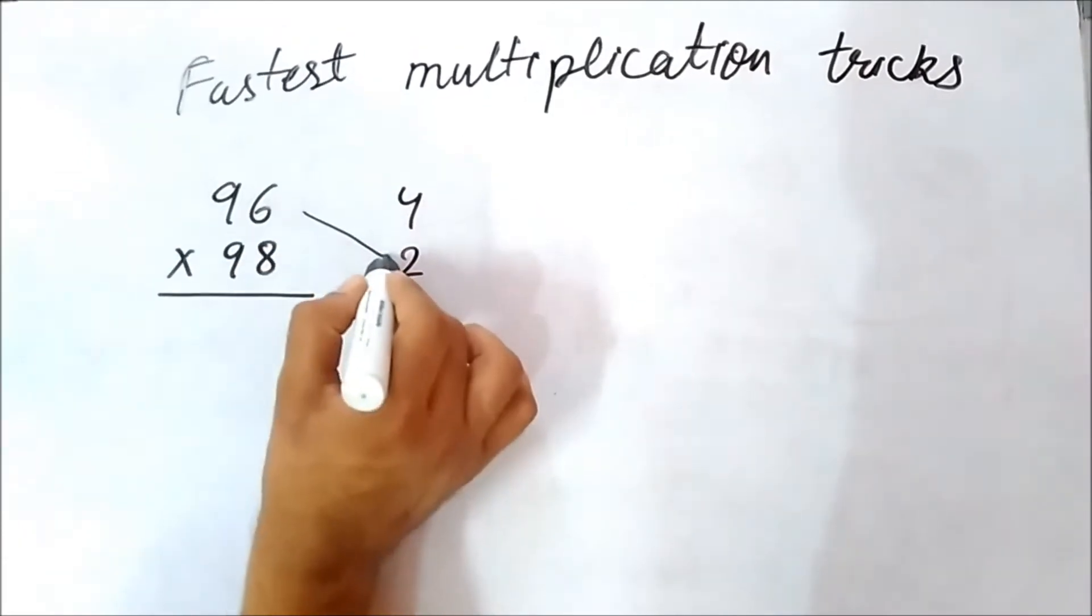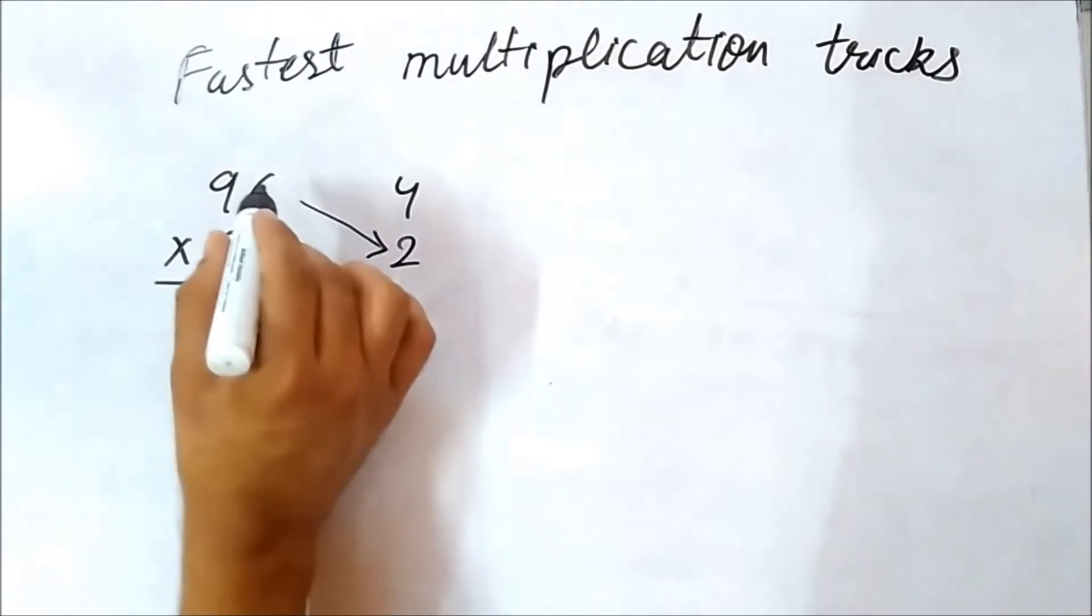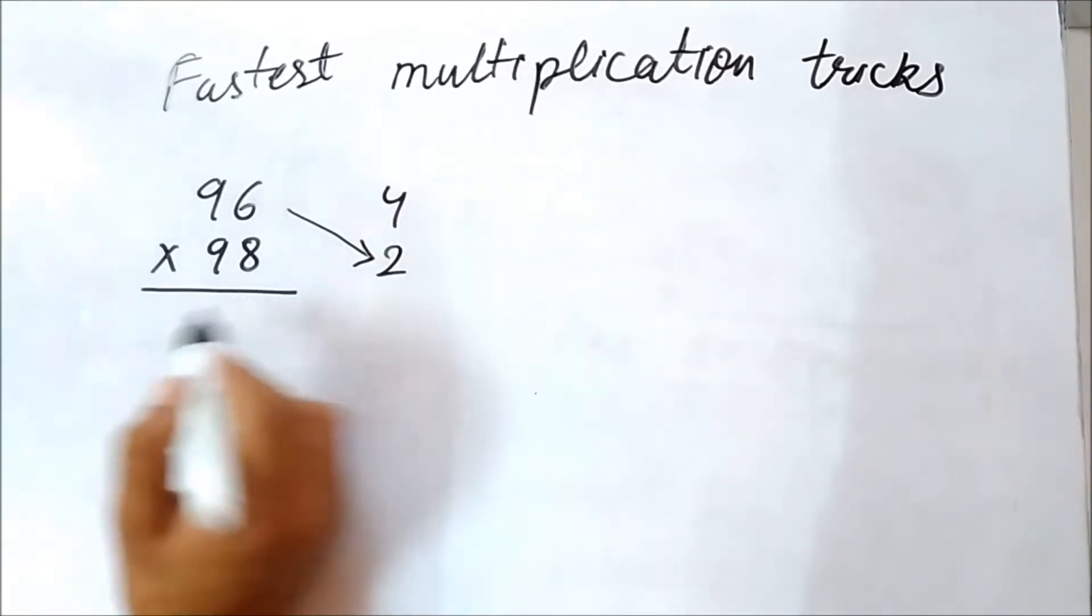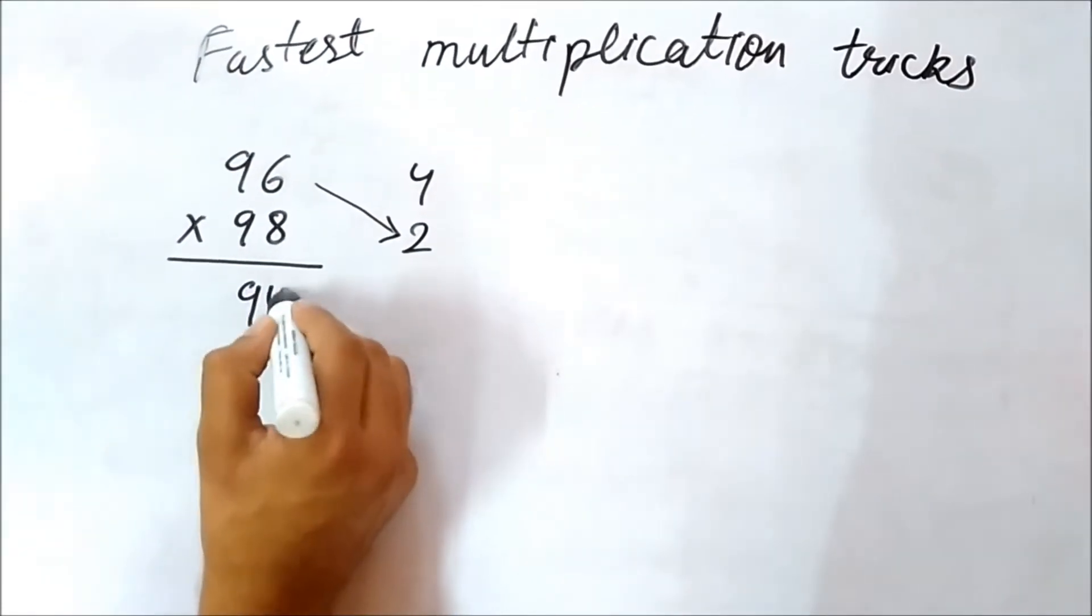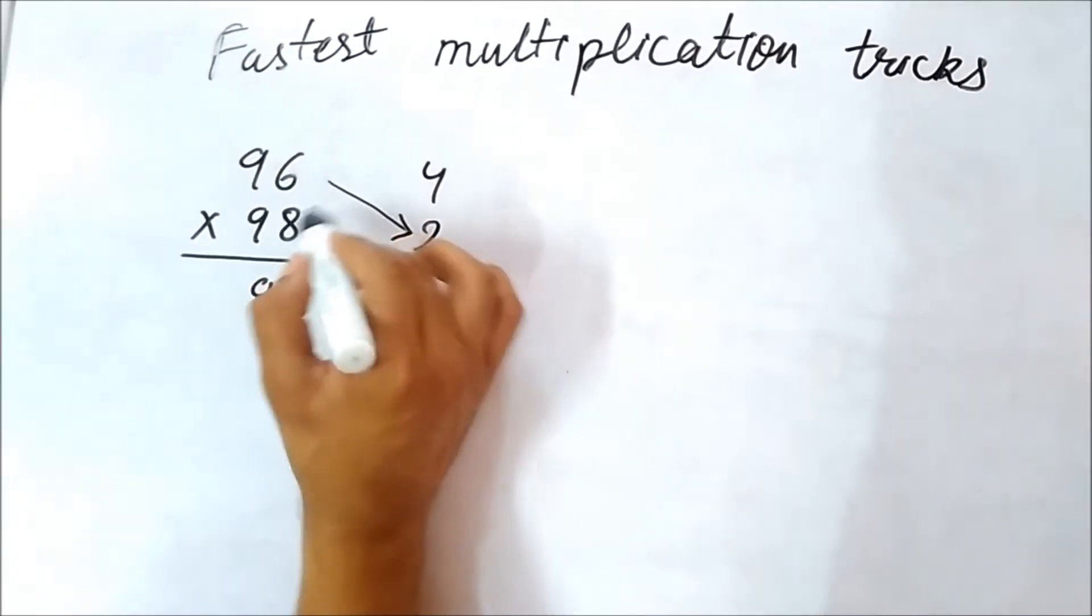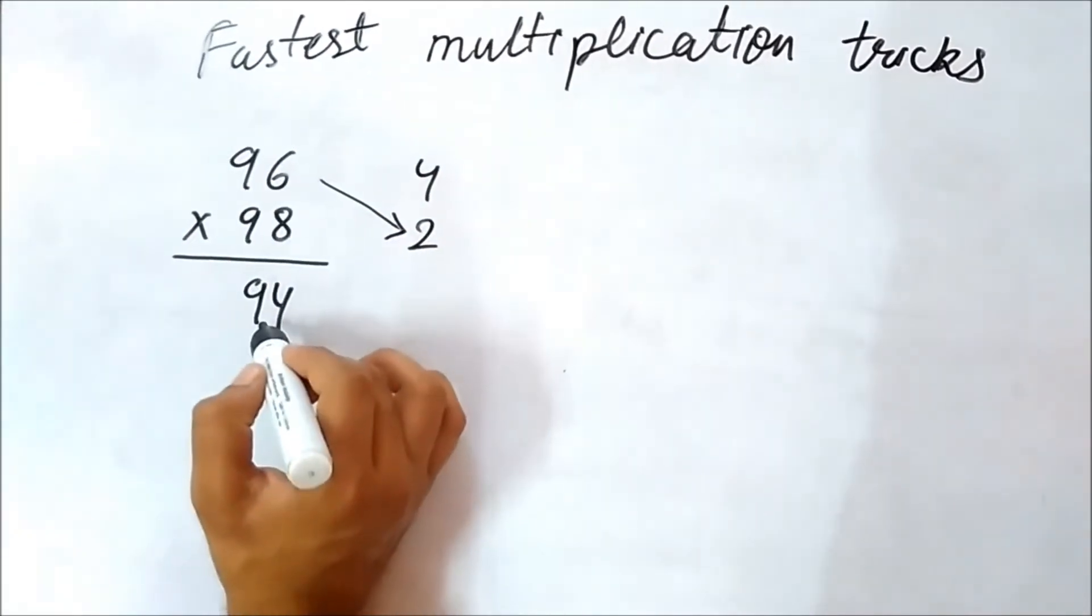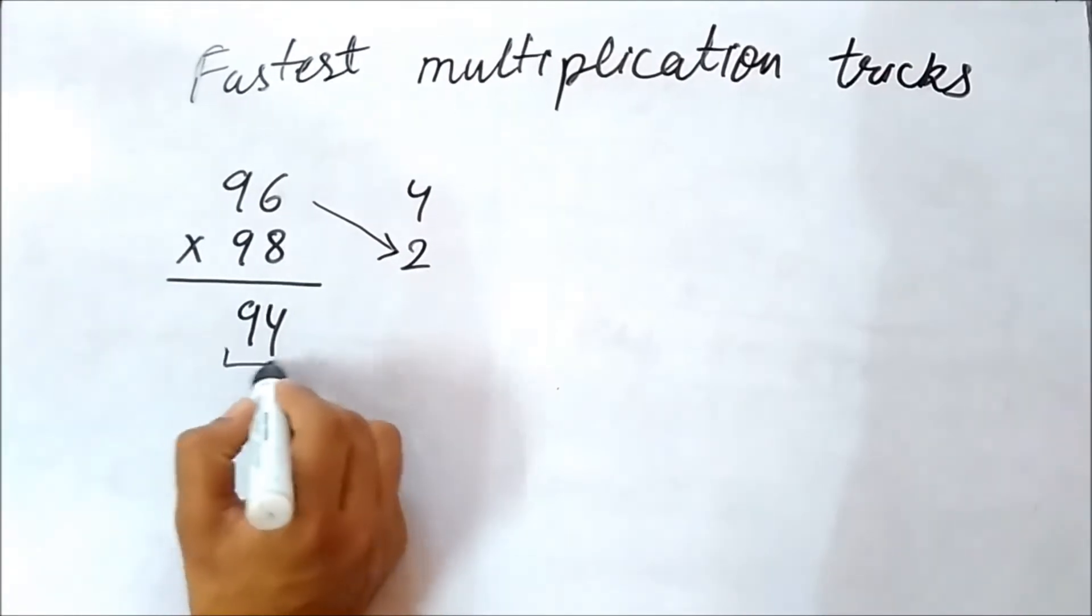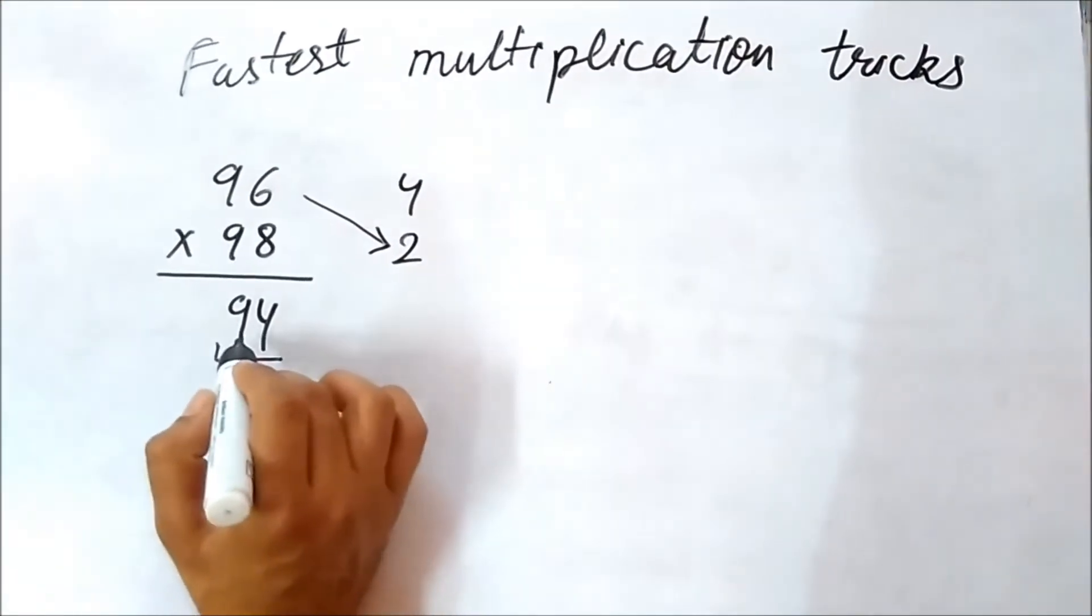So next is, we have to subtract the numbers diagonally. Only once, 96 minus 2, we will do 94. If you will do 98 minus 4, you will get the same answer. That is your wish, you can do anyhow. So the first two digits of the multiplication we got, 94, by subtracting diagonally.